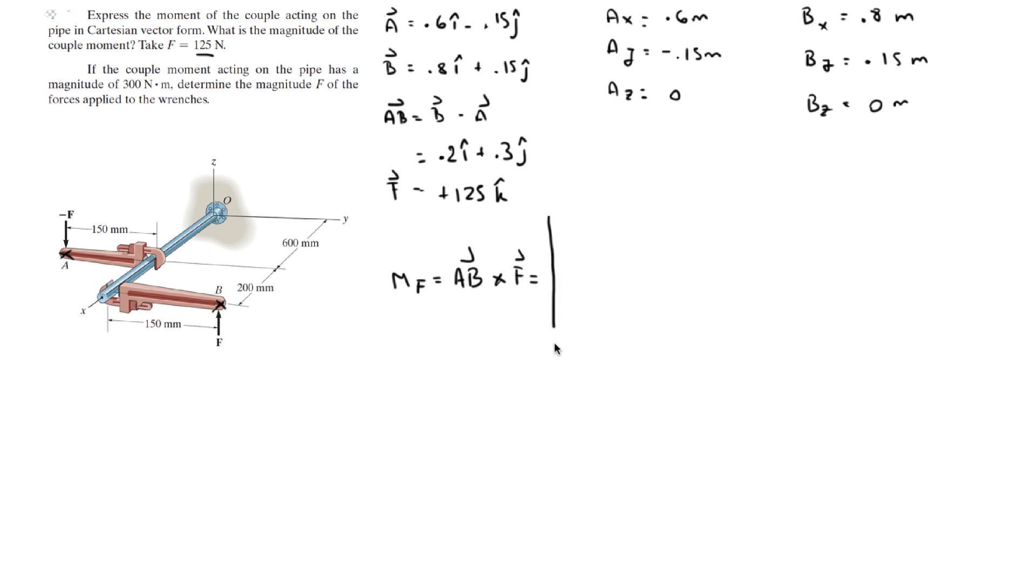So we build our matrix. We got I, J, K. For AB, we got 0.2, 0.3, and 0. And for F, we got 0, 0, and 1.25.